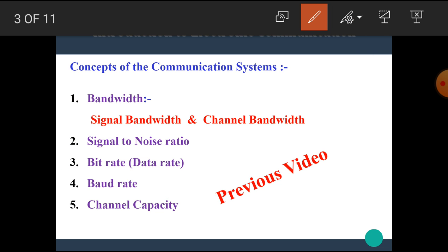Let's take a short summary of the previous video. In that video, we learned about bandwidth. We know that bandwidth is the range of frequencies that contains the information. Bandwidth is classified into two types: signal bandwidth and channel bandwidth. Simply, the bandwidth of a signal is called signal bandwidth and the bandwidth of a channel is called channel bandwidth.